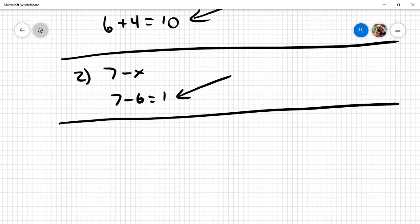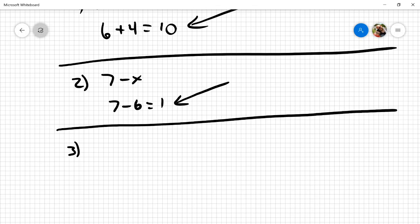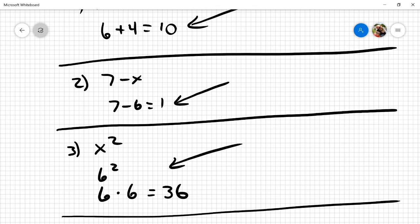Okay, so let's move to number three. Three is x squared. Remember, x is six. So it's six squared, which is six times six, and that would then equal 36. Again, this is you showing your work or the strategy that you used.